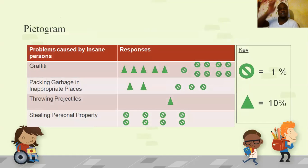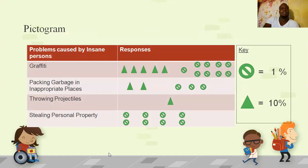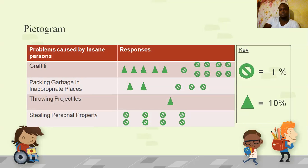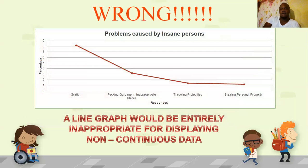Here is an example of a pictogram: a circle with a slash represents one percent and a triangle represents ten percent. Everything should add up to 100%. Remember graffiti was 58% and the other categories add up accordingly. A line graph would not be appropriate for this type of data, so stay away from line graphs unless you are presenting continuous data.